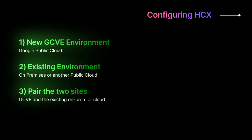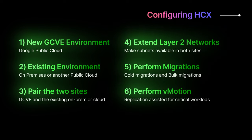To get started: install and configure HCX in the GCVE environment, then install and configure HCX in the existing VMware environment. Pair the two sites — GCVE and the existing on-premises or public cloud. Then extend layer 2 networks, perform and schedule migrations, and execute cold bulk vMotion.